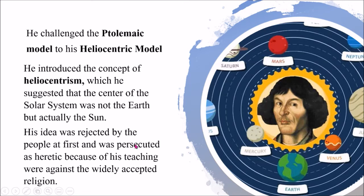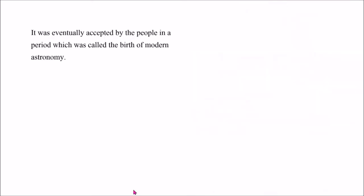His idea was then rejected by the people, especially Catholic belief. It was rejected at first, and he was persecuted as heretic because his teaching was against the widely accepted religion, the Catholic Church. Later on it was eventually accepted by the people in a period which was called the birth of modern astronomy.